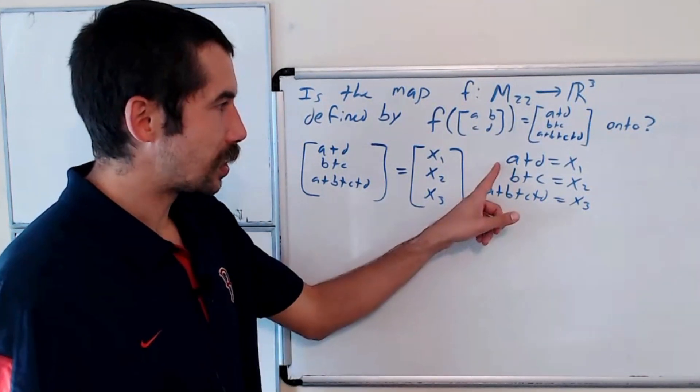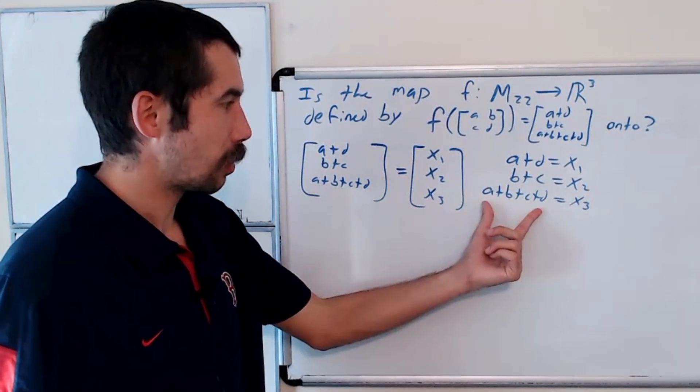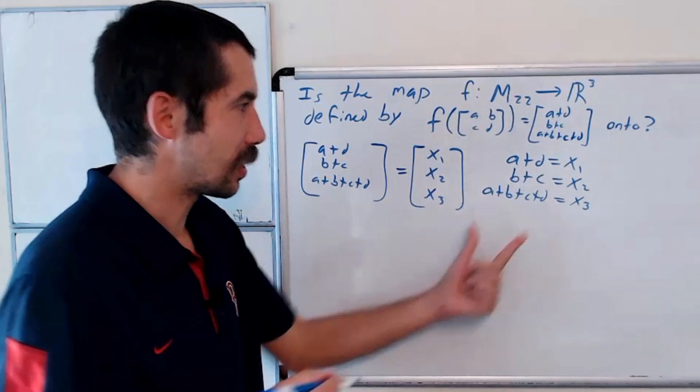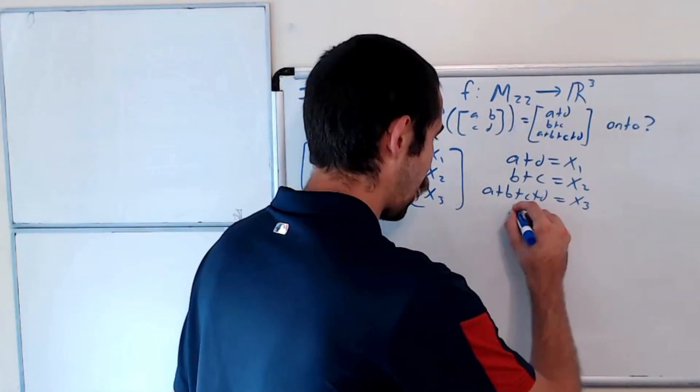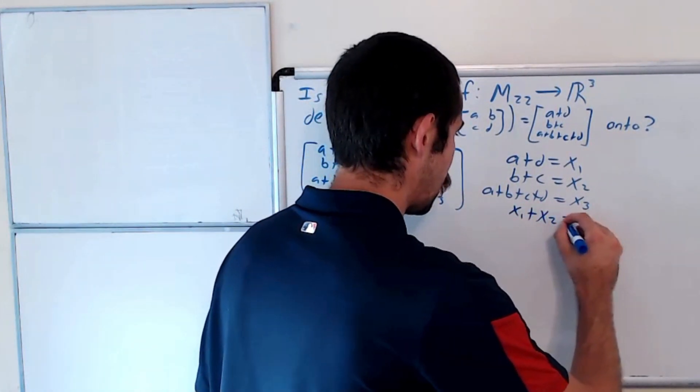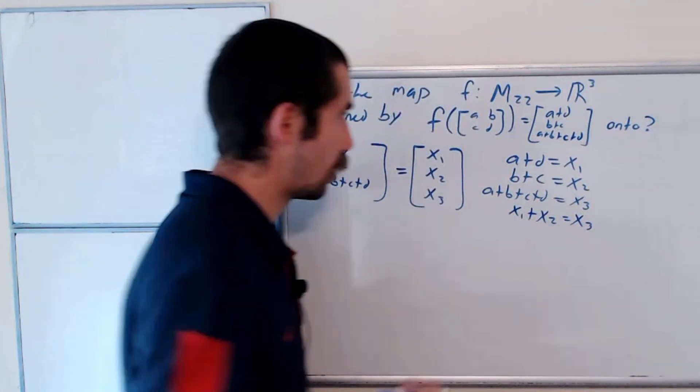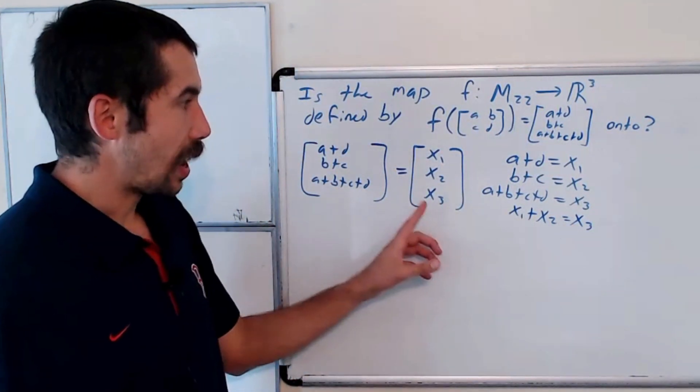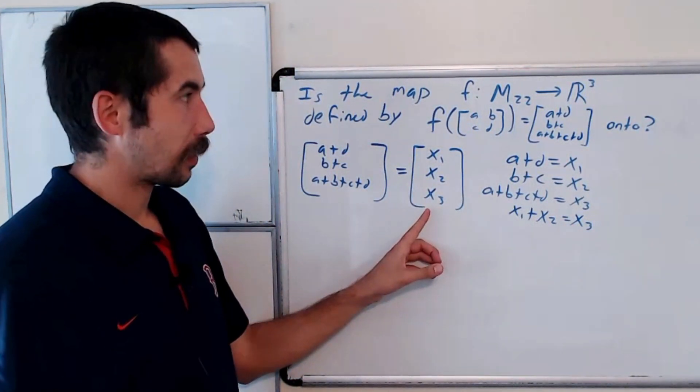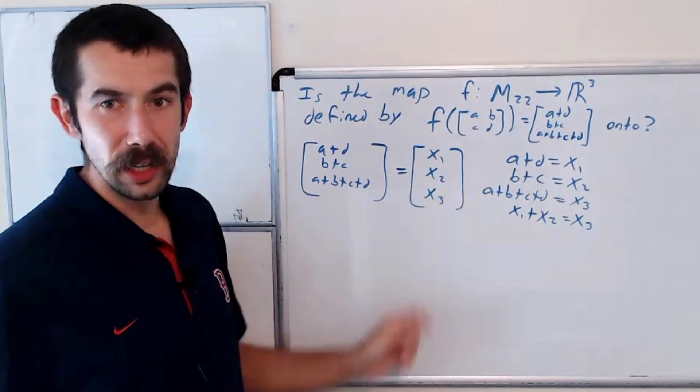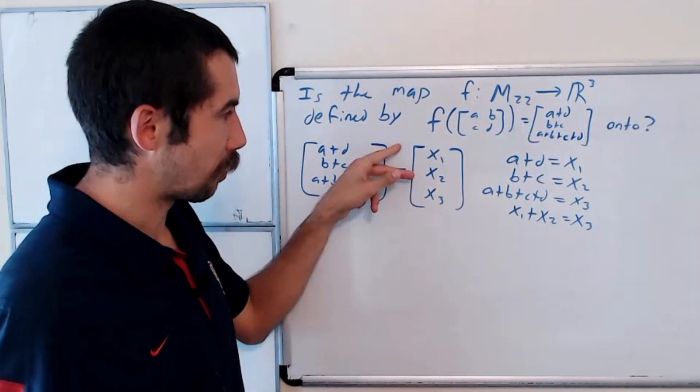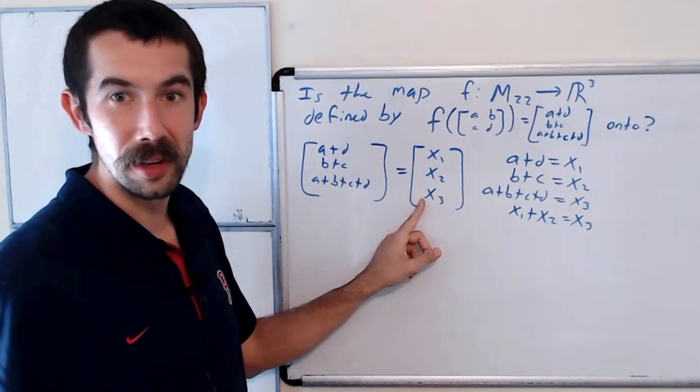But notice we could sub in X1, X2, X1 plus X2 onto this left-hand side. So this is really X1 plus X2 is equal to X3. So any vector in the range of this function has the property that the sum of the first two entries equals the third entry.